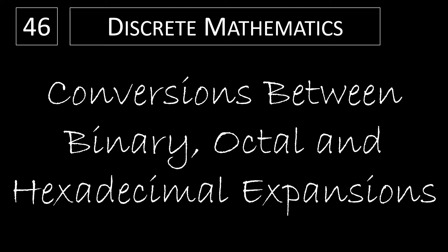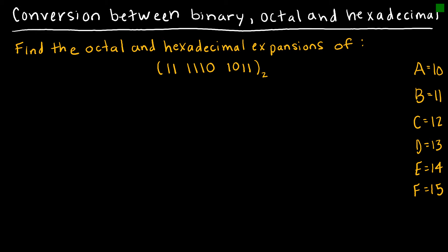Let's take a look at how we might convert between binary, octal, and hexadecimal expansions. The first thing I want to do is look at a binary number and write it as an octal expansion and a hexadecimal expansion. We're going to start with octal. Octal is base 8, and base 8 is 2 to the 3rd.